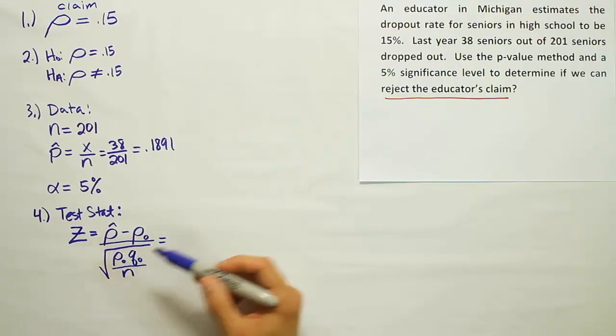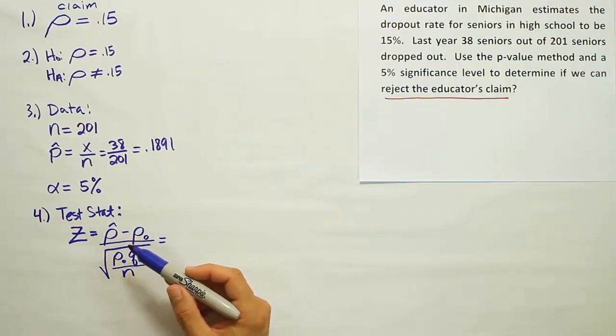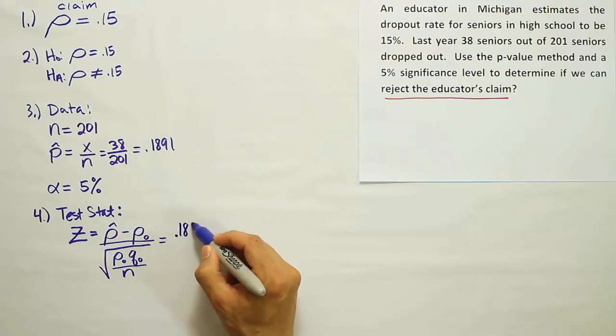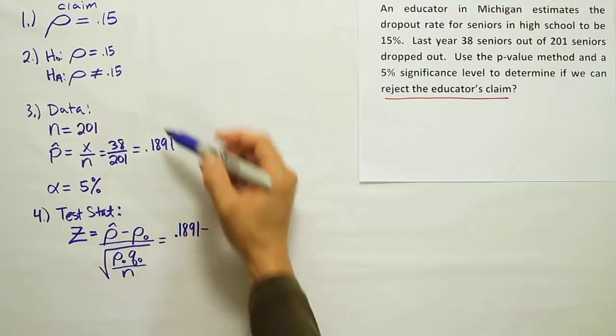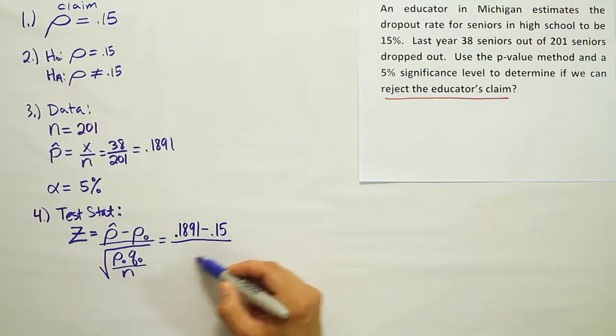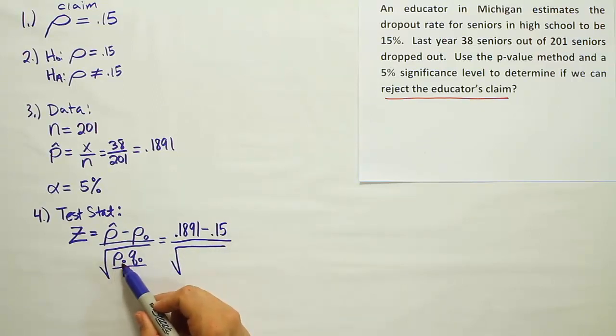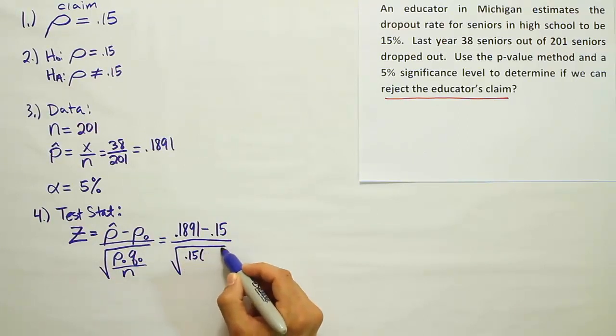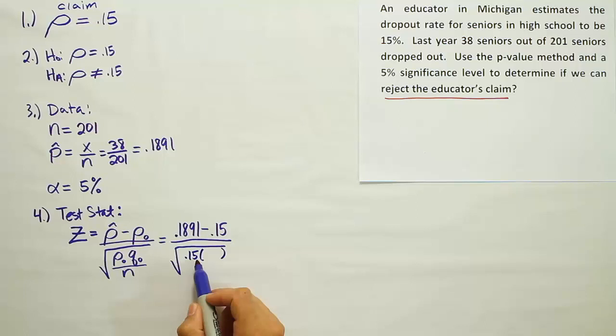Okay, so the P-hat is given up here as 0.1891. Rho-naught then is this number we find from H0, which is 0.15. That'll be divided by the square root of rho-naught times q-naught. Rho-naught again is 0.15. And q-naught is going to be the complement of that. So if this is 15%, we subtract 15% from 100% to get 85%, and that's the q-naught. It's the complement of the P-naught. And then the n here at the bottom is 201.